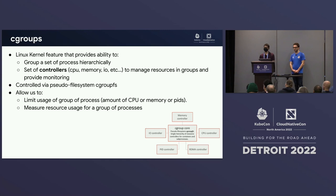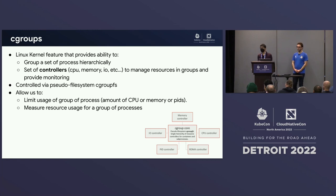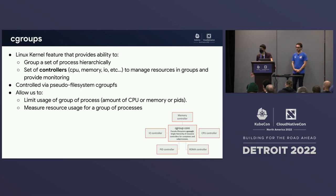We implement resource management using cgroups in the Linux kernel. Cgroups are a way to group a set of processes hierarchically. You have a set of controllers — CPU, memory, I/O — that allow you to put limits on those processes. Cgroups are controlled through a pseudo file system called cgroupfs. You write to files to set limits, and read other files to monitor statistics like memory usage and process counts.